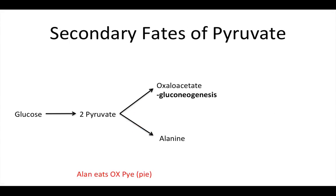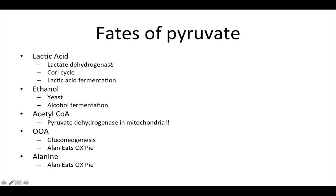Some secondary fates of pyruvate: pyruvate can go on to become oxaloacetate, which is a reaction in gluconeogenesis. It can also become alanine — that's the main amino acid here. The way I remember this is 'Alan eats ox pie' — ox for oxaloacetate and pie for pyruvate.